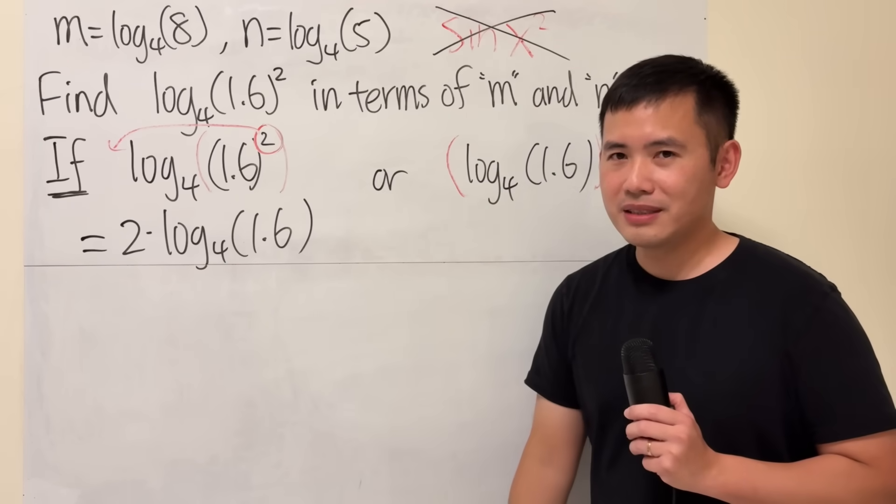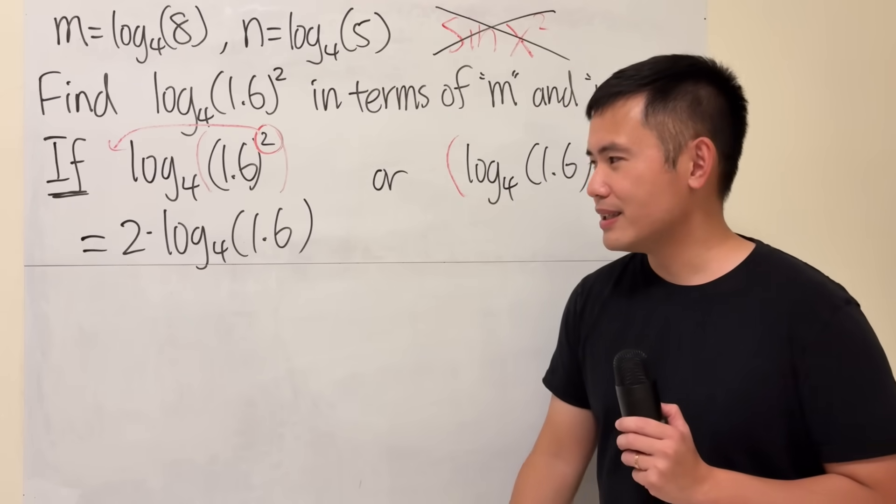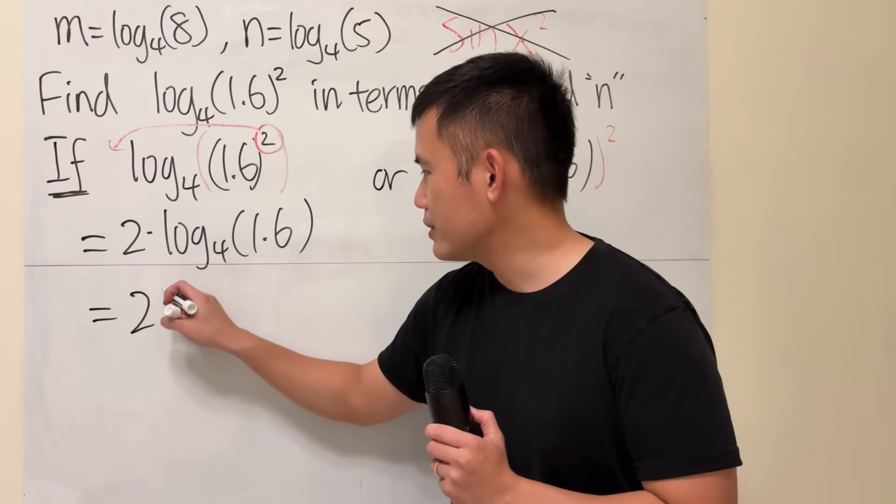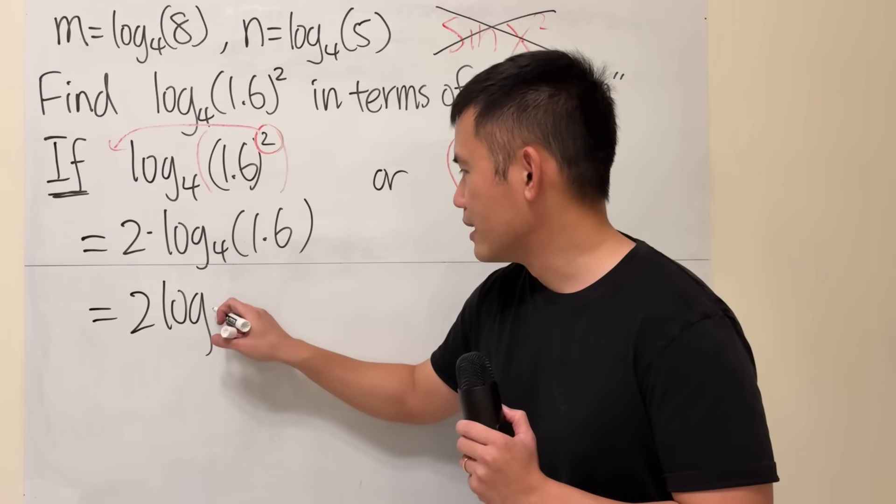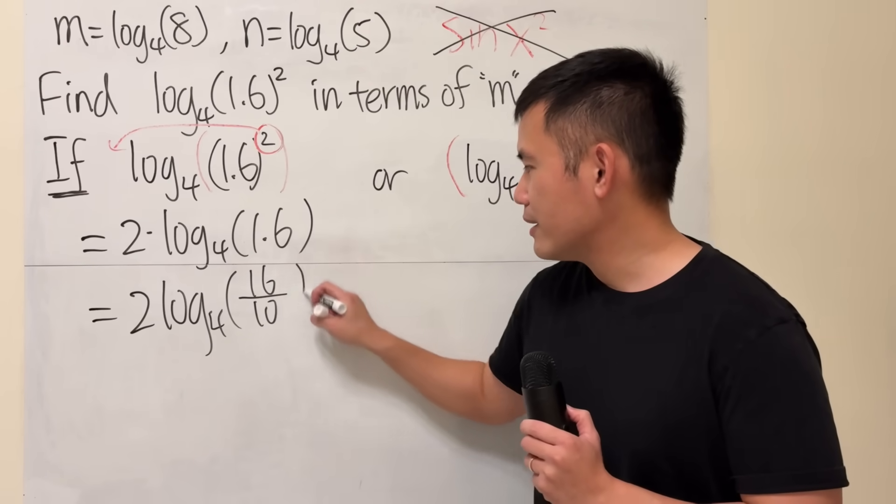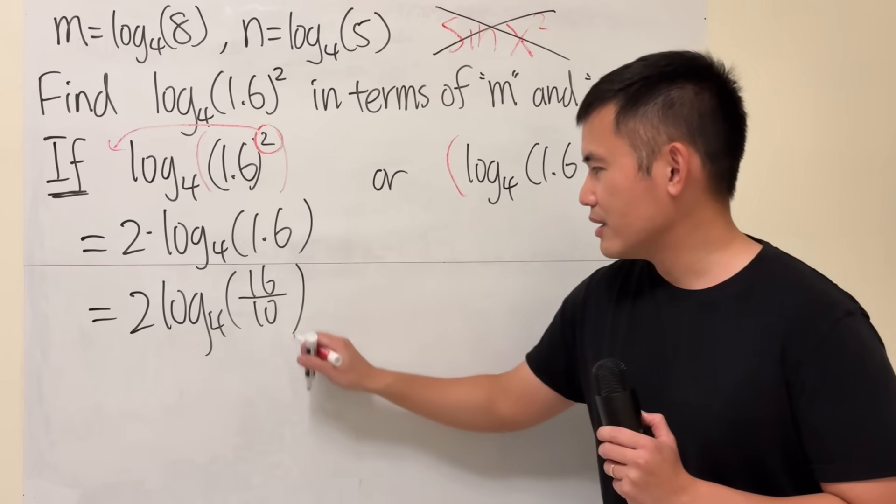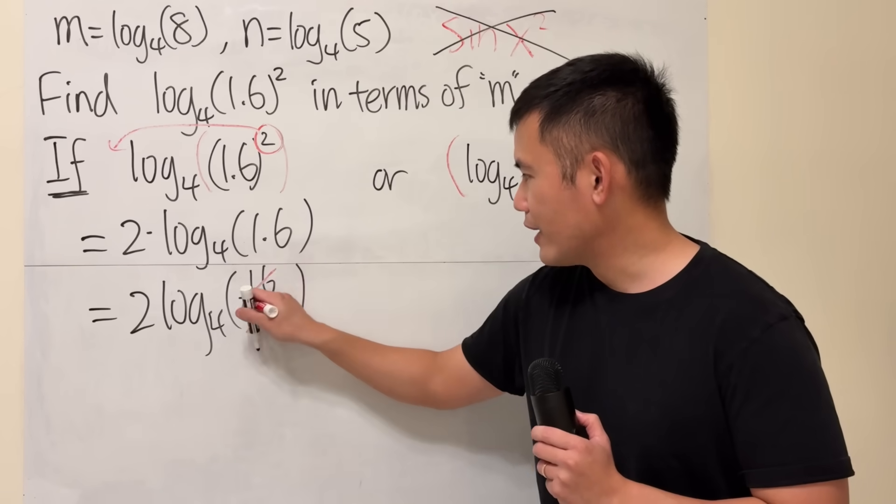Now what's 1.6? It's like 16 over 10. So we can look at this as 2 times log of 16 over 10, and we can reduce the fraction. Divide it by 2, divide it by 2.